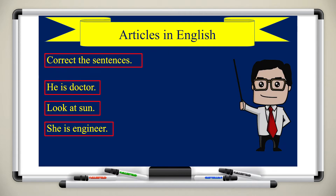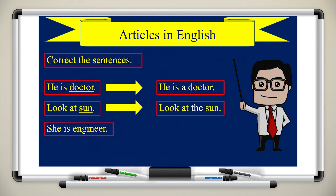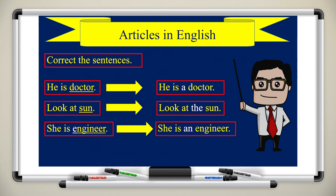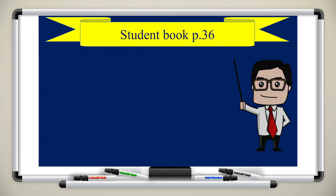Let's correct the sentences. 'He is doctor' — the word 'doctor' begins with a consonant, so we put 'a': he is a doctor. 'Look at son' becomes 'look at the sun.' For the last one, 'she is engineer' — 'engineer' begins with the vowel 'e,' so we use 'an': she is an engineer.